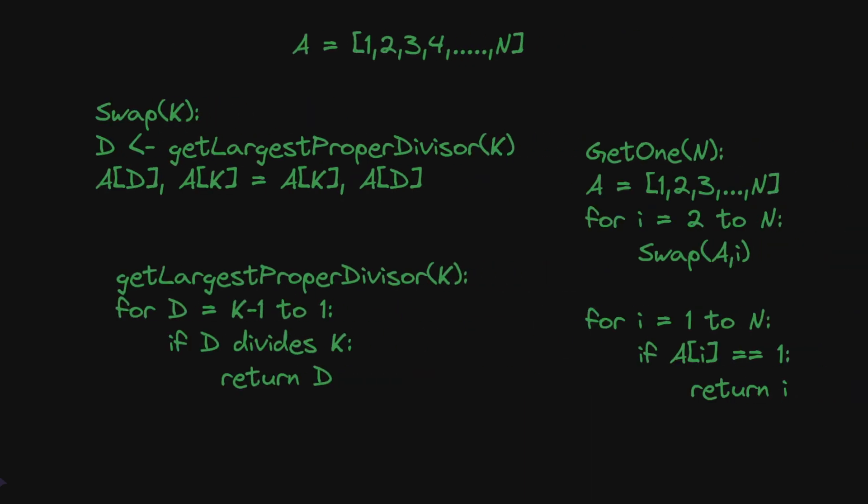The final algorithm can be defined as a equal to 1, 2 up to n. For i equal to 2 to n call swap operation with a and i. Once you are done with all the swap operations, for i equal to 1 to n if ai equals 1 return i. Because all the elements are distinct in the original array, only one index will satisfy ai equal to 1 and we can directly return it.